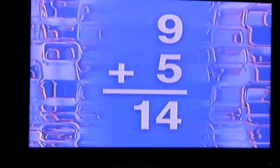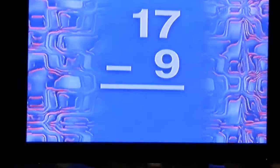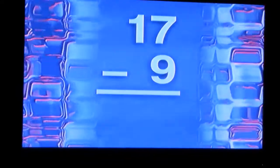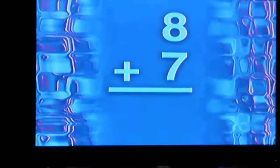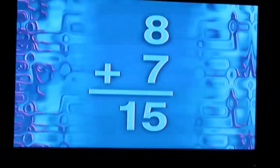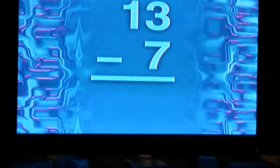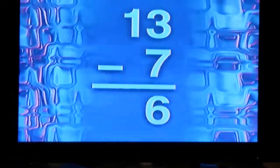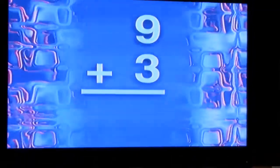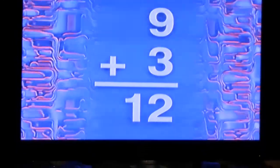17 subtract 9 is 8. 8 and 7 is 15. 13 minus 7 is 6. 9 and 3 are 12.